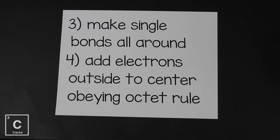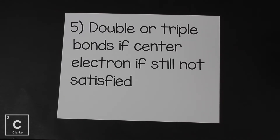At this point, if we're following the rules, we should have our elements in place. Now we're going to make single bonds all the way around. Single bonds contain one pair of electrons. Double bonds contain two pairs of electrons. Triple bonds contain three pairs of electrons. We're going to add electrons to the outside first, then go to the central atom, obeying the octet rule for every element. If after adding all electrons the octet rule is still not being followed, that means we need to form double or triple bonds.